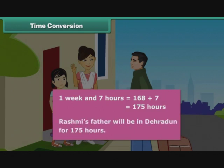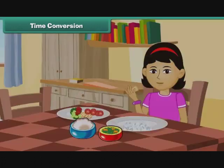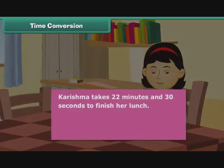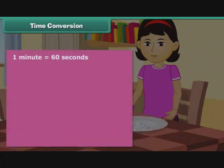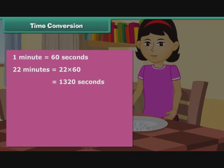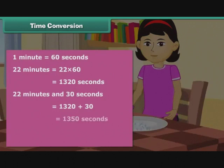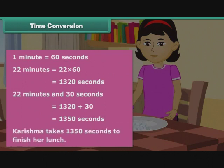Rashmi's father will be in Dehradun for 175 hours. Karishma takes 22 minutes and 30 seconds to finish her lunch. Express the time taken in seconds. 1 minute is equal to 60 seconds. 22 minutes is equal to 22 into 60, which equals 1320 seconds. 22 minutes and 30 seconds is equal to 1320 plus 30, which equals 1350 seconds. Karishma takes 1350 seconds to finish her lunch.